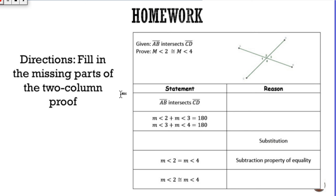All right guys, this says to fill in the missing parts of the proof and all you have to do is look at these proofs and fill in the blanks. So let's go ahead and do that. It says given line AB intersects line CD.